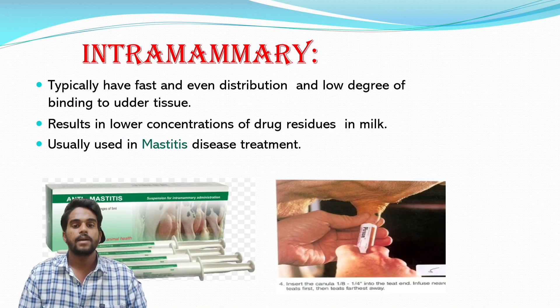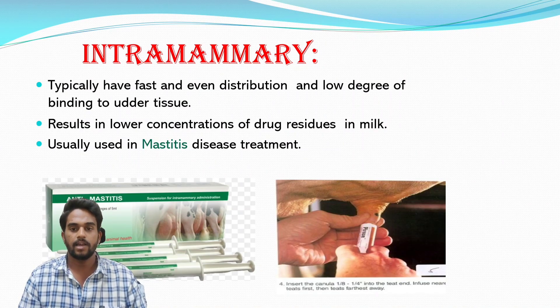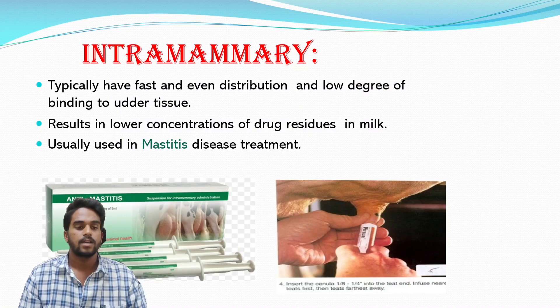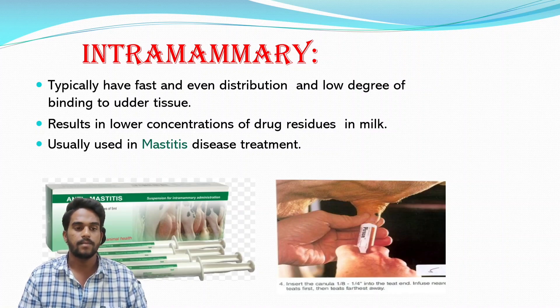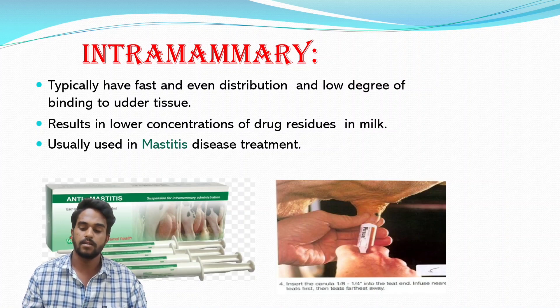Intramammary administration typically results in fast and even distribution with a low degree of binding to udder tissue. This results in lower concentration of drug residues in milk, and it is usually used in mastitis disease treatment.